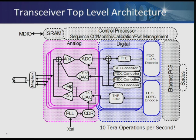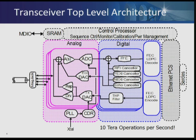On the transmit side, worth mentioning is the existence of Tomlinson-Harashima pre-coding as a pre-equalizer — think of it as a sophisticated pre-equalizer — followed by a transmit DAC and a transmit driver, and the associated circuitry for echo cancellation. We do echo cancellation not only in analog but also in digital. So there are multiple prongs of echo cancellation to get to the desired 60 dB level.